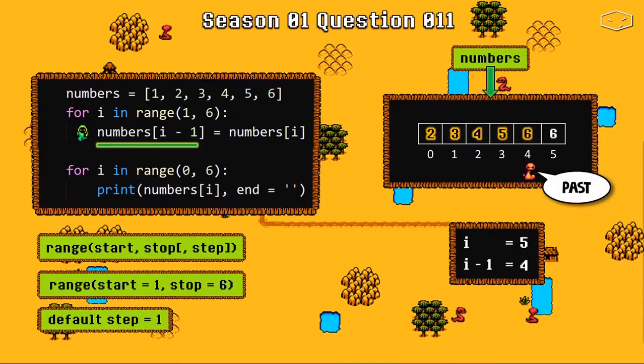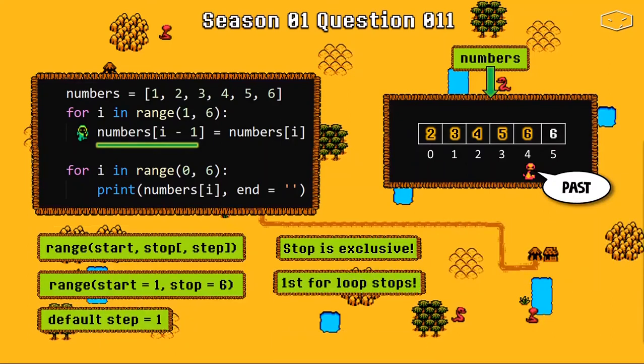Why this is the last cycle? Remember, the parameter stop of range is exclusive, so the number 6 doesn't count and our first loop stops.